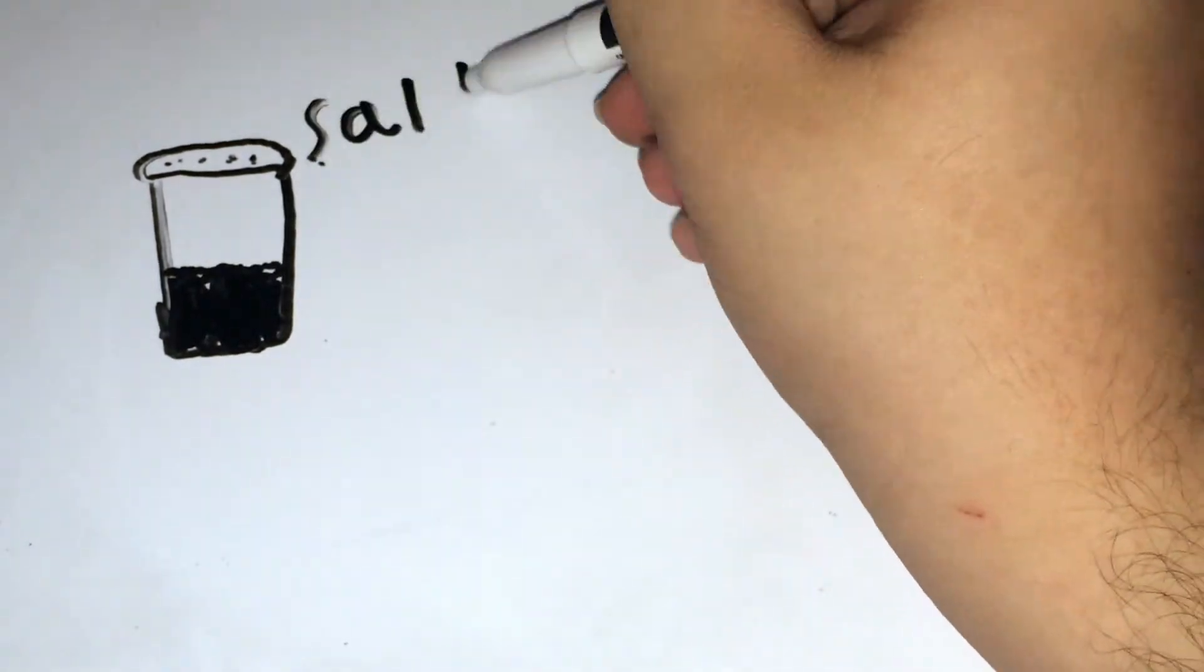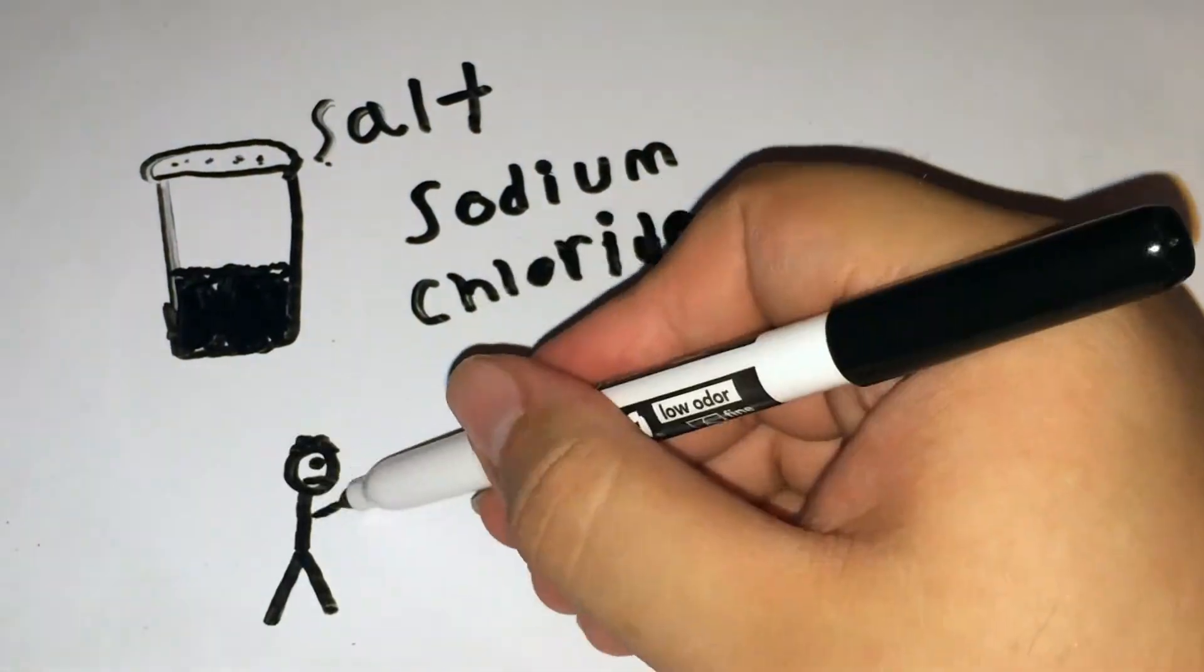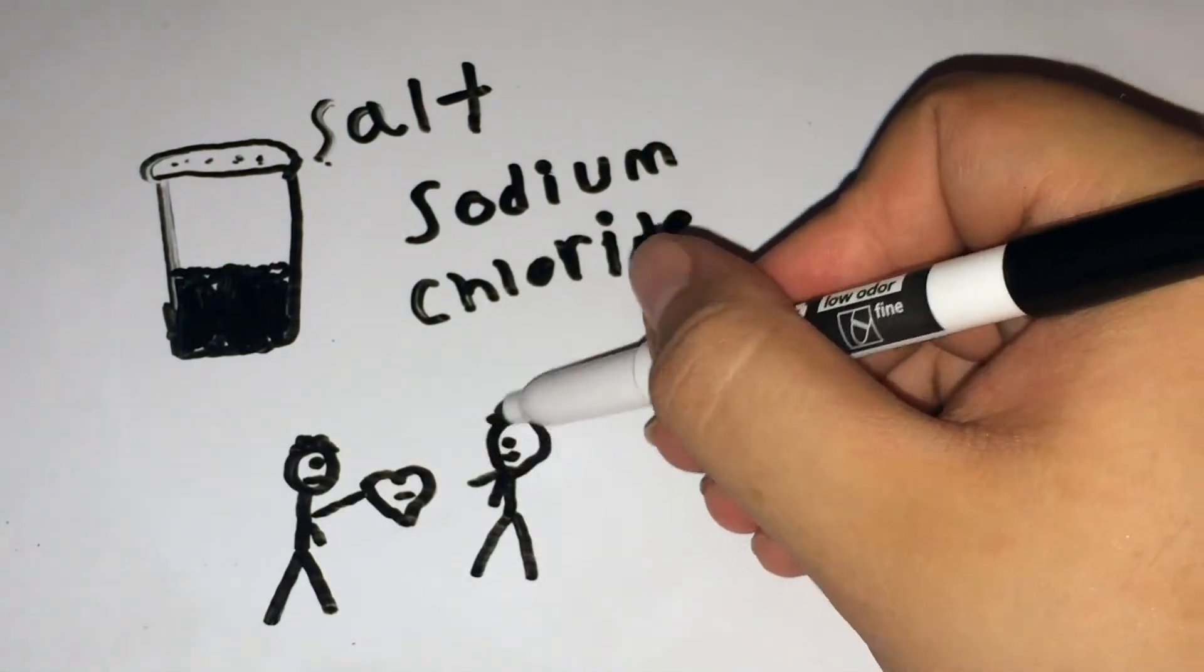For example, table salt, which is sodium chloride, is an ionic bond. Sodium will donate an electron to chlorine, thus causing an attraction which will bind them together.